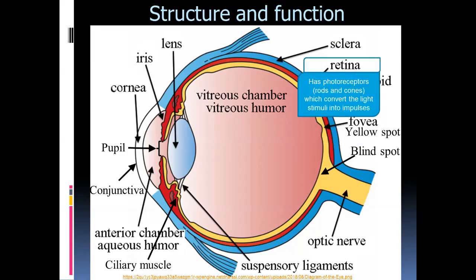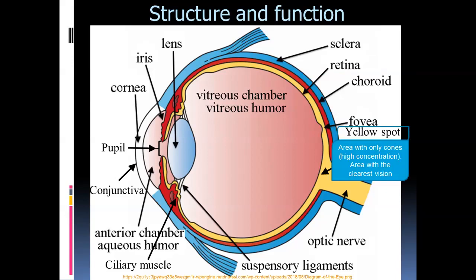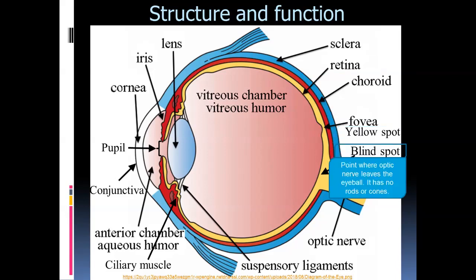The retina is the receptor — it contains photoreceptors known as rods and cones. These light receptors receive the stimulus and convert it to an impulse. The yellow spot on the retina contains only cones in high concentration and is the area that allows for the clearest color vision. The blind spot is where the optic nerve leaves the eyeball; it has no rods and cones, so if an image falls there, no impulse is made — hence it is the blind spot.